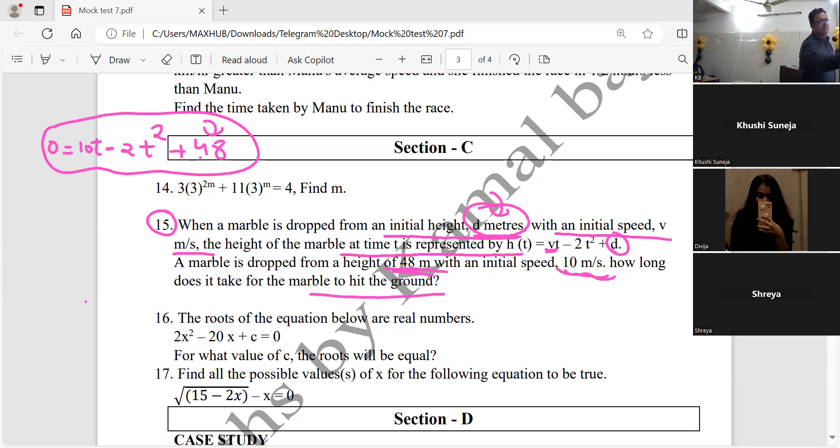At a particular time the height will be zero. You have a quadratic: minus 2t square plus 10t. This is the question from the case study.